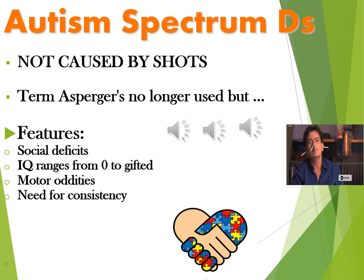Let's consider autism spectrum disorders. Previously we would just call it autism, but the DSM-5 now calls it a spectrum disorder. It is definitively — according to experimental evidence — not caused by shots. There have been many large-scale studies with tens of thousands of children comparing immunized versus non-immunized groups, and if it were related to injections, you'd see a higher rate in the immunized group — and this is not what research has found in study after study.